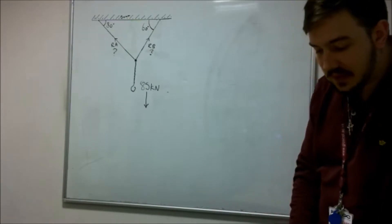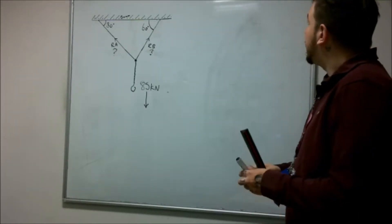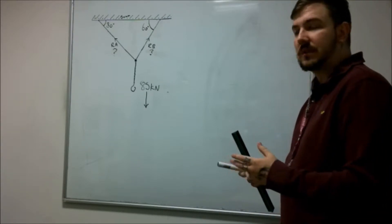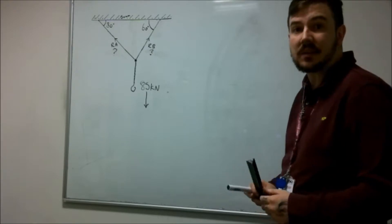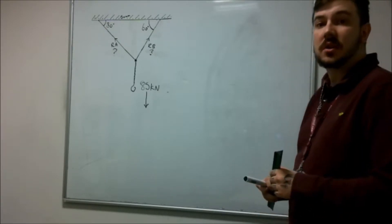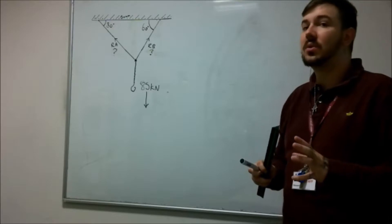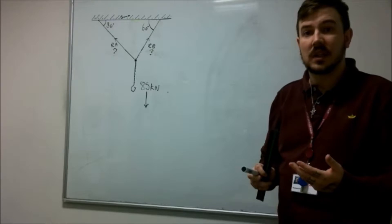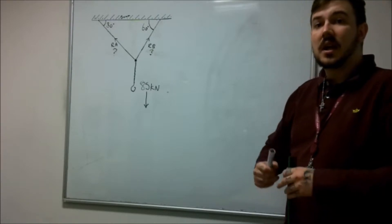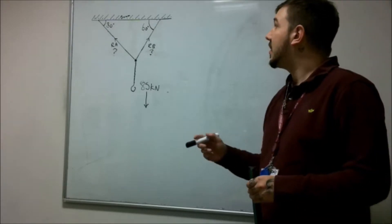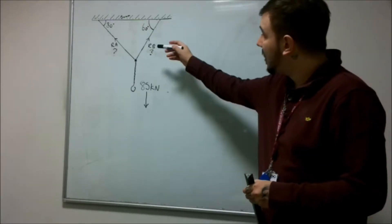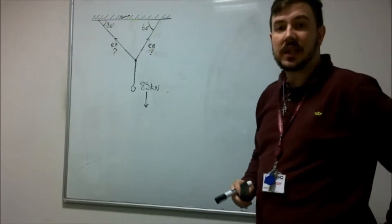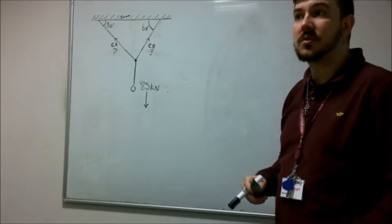In this method, what you do is you convert your force to a length and select an appropriate scale. In this example we're going to use the scale of one kilonewton equals one millimetre. By drawing three lines parallel to our forces — parallel to the downward force and parallel to the two reaction forces — we can work out those reaction forces.